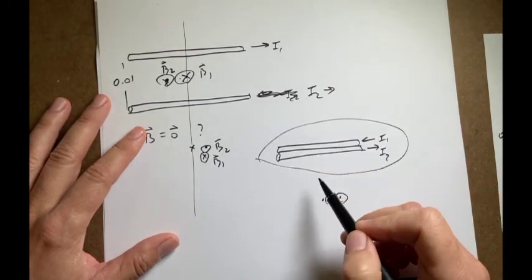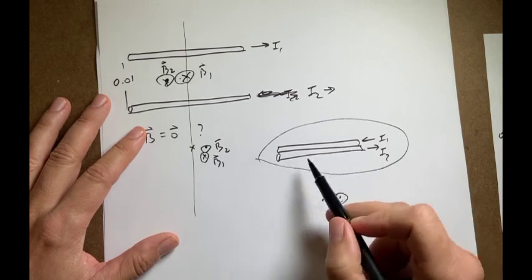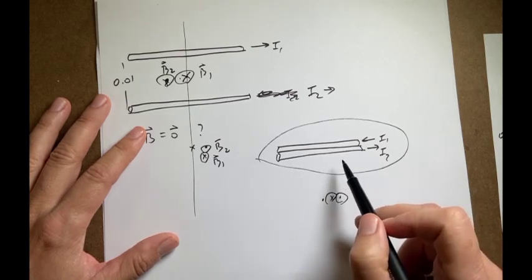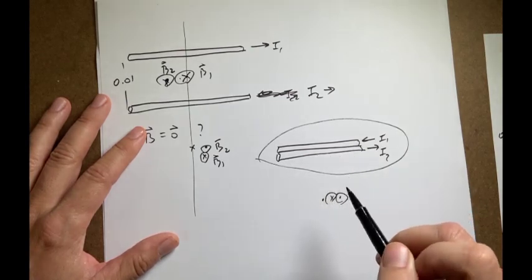And this is actually why, when you have a power cord, the two wires are right next to each other. Because the magnetic fields, due to the two wires, mostly cancel outside of that.